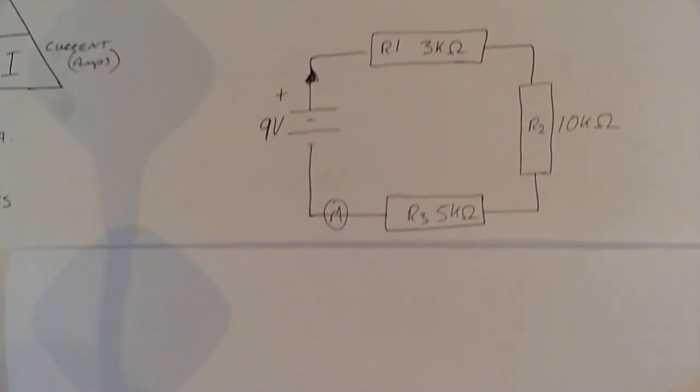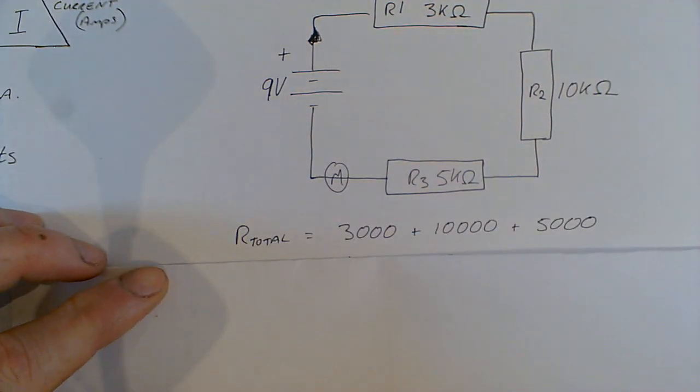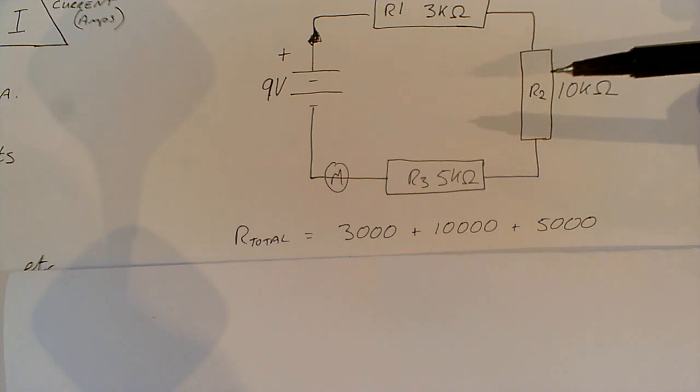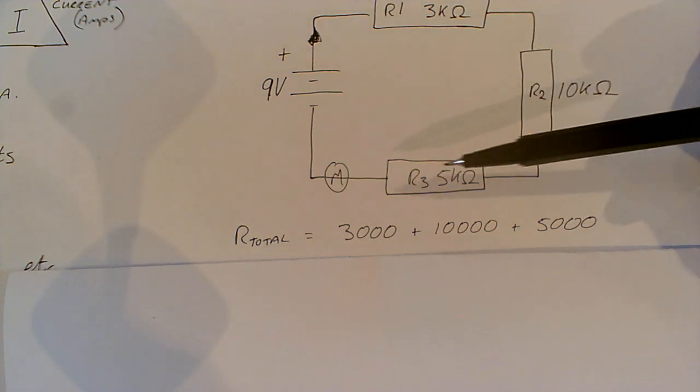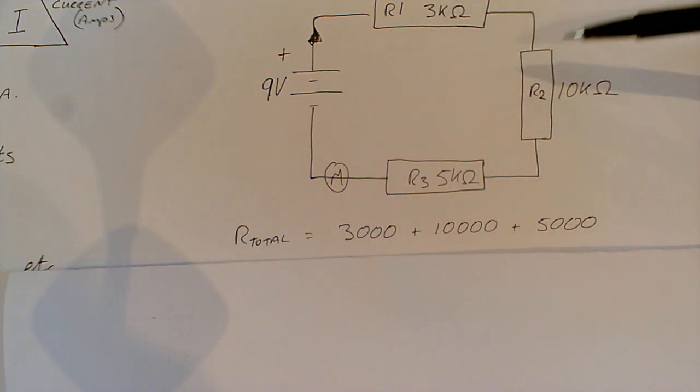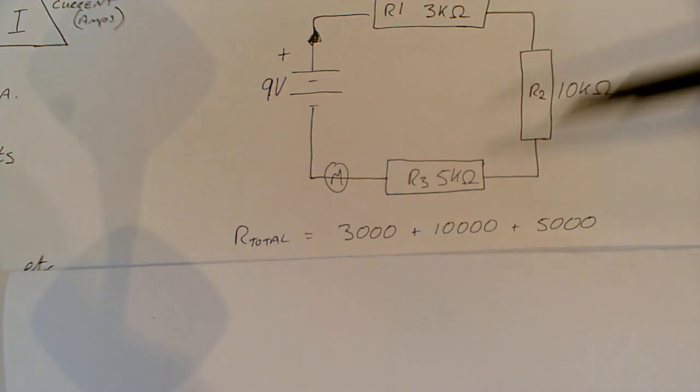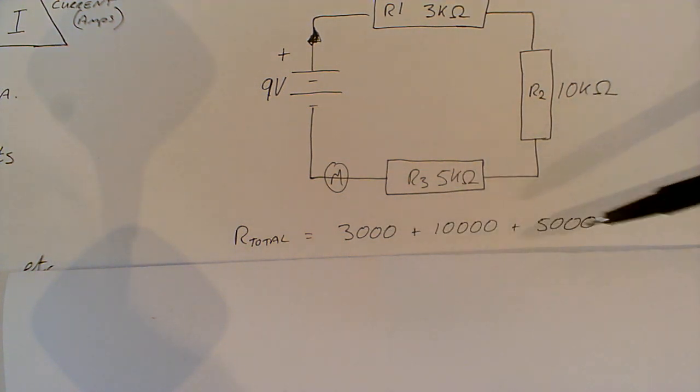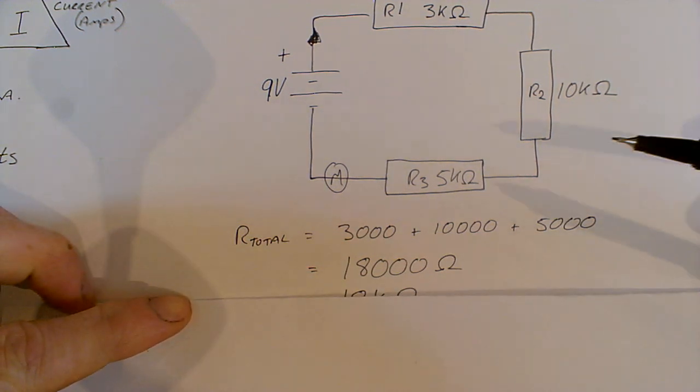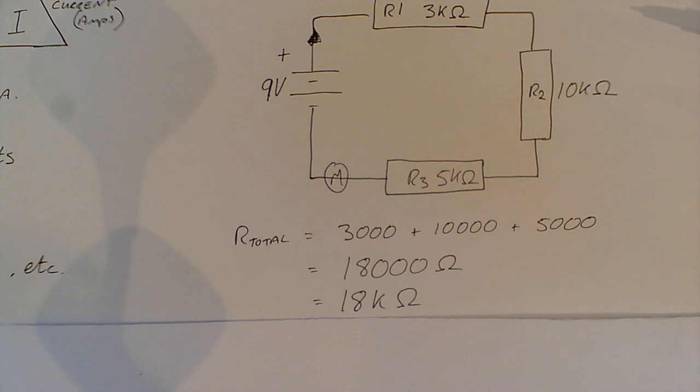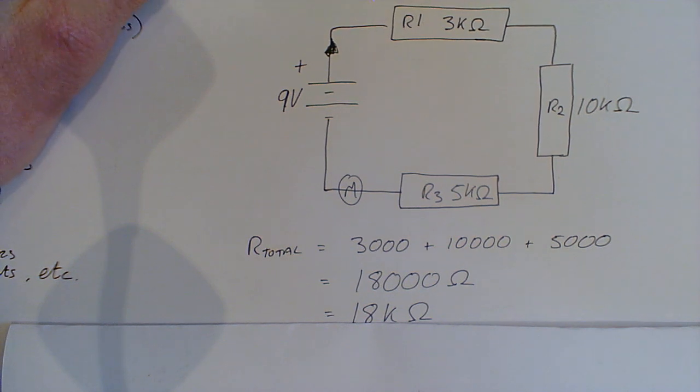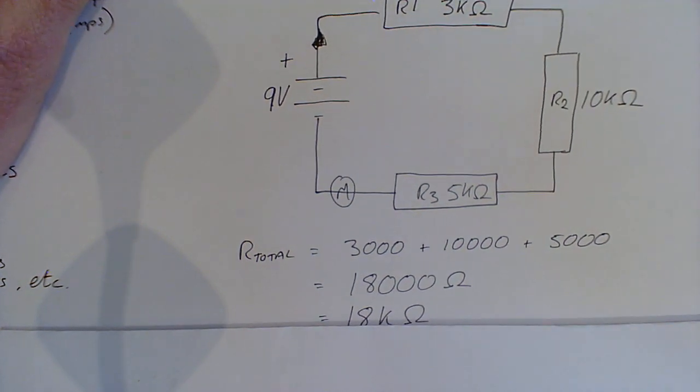We have got to calculate the total resistance of all of those resistors. Those resistors are in series, and the formula is: if the resistors are in series, you just add one to the next. 3k is 3,000 ohms, 10k is 10,000 ohms, 5k is 5,000 ohms. Add the three of them together and you end up with 18,000 ohms or 18k ohms.